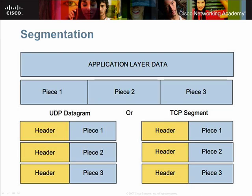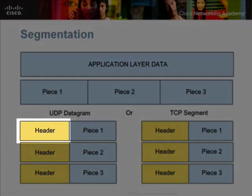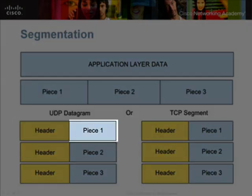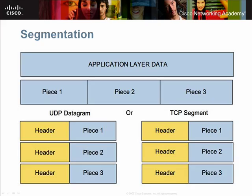To identify each segment of data, the transport layer adds a header to each segment that contains a unique number. These numbers are also used for reassembling the segments at the destination host.